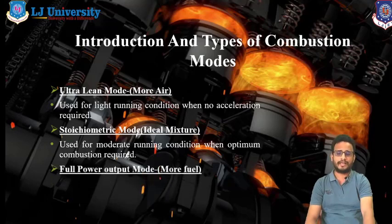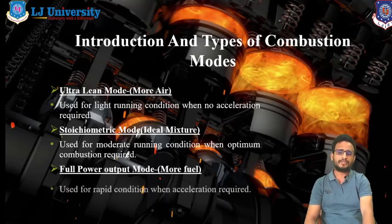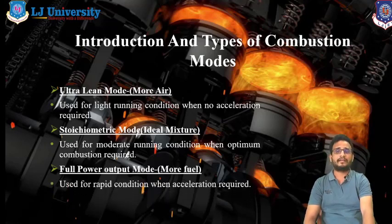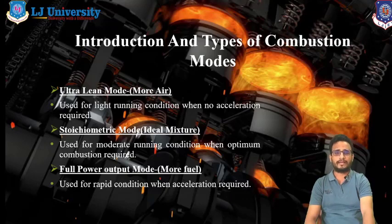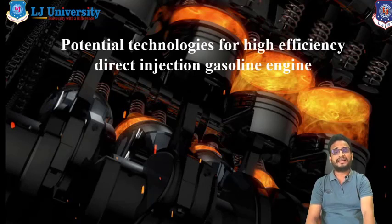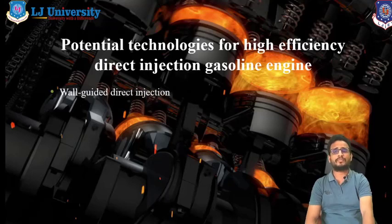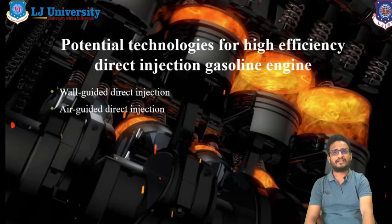The last combustion mode is the full power output mode, where more fuel power output is required compared to the ultra lean or stoichiometric modes. In this mode, rapid combustion occurs, and it is used when heavy acceleration is required. Moving on, there are mainly three types of direct injection systems used in IC engines: first is the wall guided system, second is the air guided system, and third is the spray guided direct injection system.